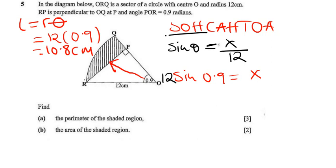Now we're dealing with radians, so it's important that your calculator is in radians. Press mode on your calculator and then press mode again. There's 1 for degree, 2 for radians. My calculator is already in radians, so 12 sine 0.9. The value of x you should find is 9.399.